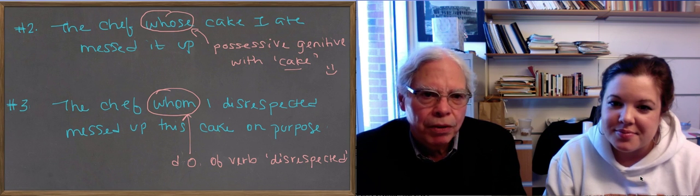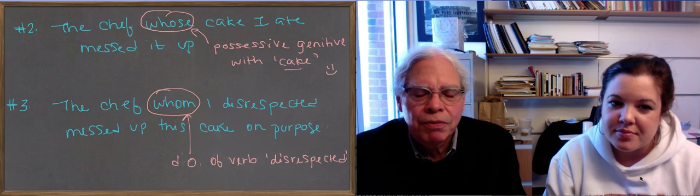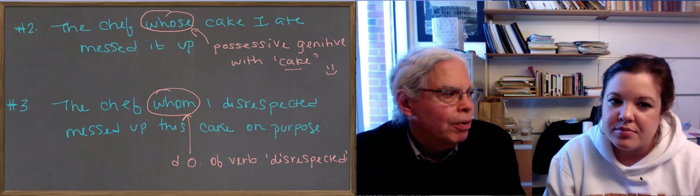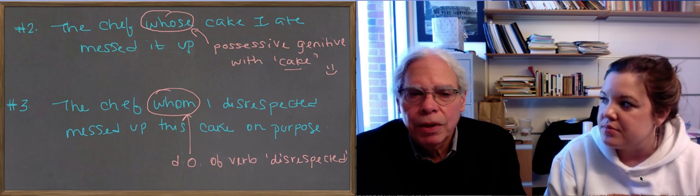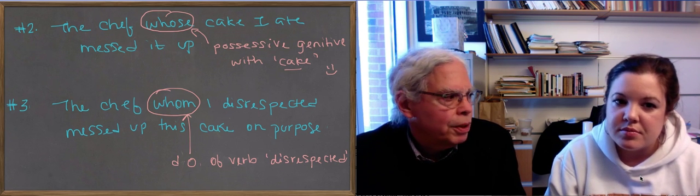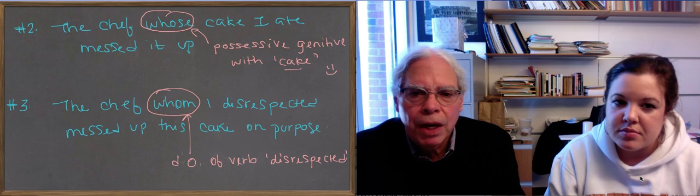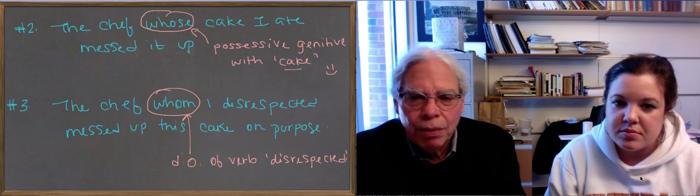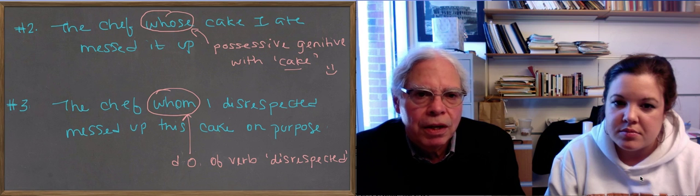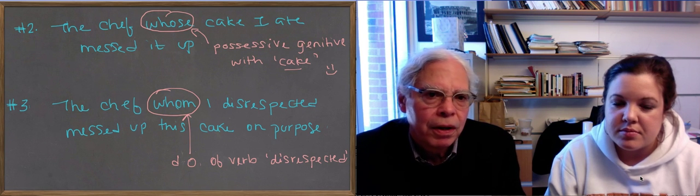Whose is spelled in a funny way, but it's really who apostrophe s. It's the genitive of who. We have remains of the inflectional system in Indo-European in the relative pronouns in English. That's why we want to look at them. It's a genitive modifying cake.